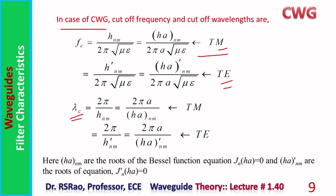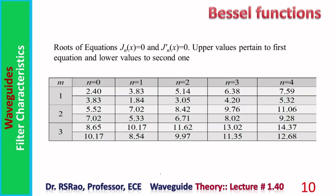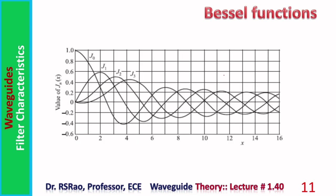For circular waveguides, h_nm values are roots of the Bessel function equation J_n(ha) = 0, and h'_nm values are roots of J'_n(ha) = 0. These roots are available in tabular form in the literature. Some important roots for different values of m and n are given here — upper values pertain to J_n(x) = 0 and lower values to J'_n(x) = 0. To better understand, the Bessel functions J₀, J₁, J₂, J₃ are shown in graphical form.